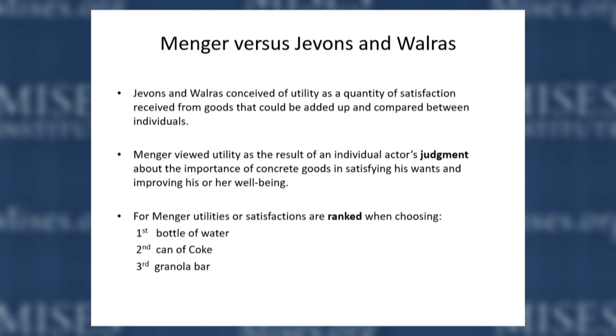Menger was different. He viewed utility as a result of an actor's judgment about how important certain goods were to their welfare. His notion of utility was ordinal — people ranked different goods according to which was most important. If you had $2 and a choice between a bottle of water, a can of Coke, or a granola bar, you would buy the one highest in your estimation. You couldn't say you liked water five times as much as a granola bar — you couldn't do mathematical operations with utility. You could simply compare and rank: first, second, third. Utility always involved choice, demonstrated only when choosing between different things.